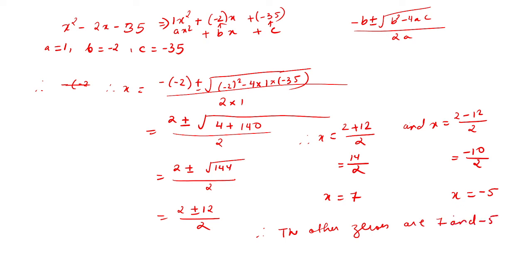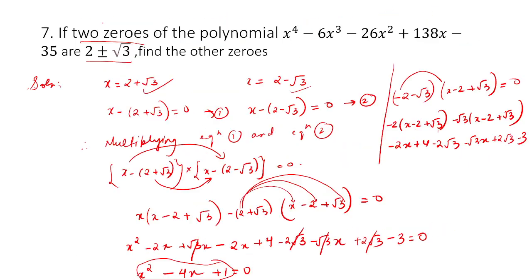In order to verify, substitute x as 7 in the original equation, and also x as minus 5, and see if you are getting 0 or not. So we will end the video here.